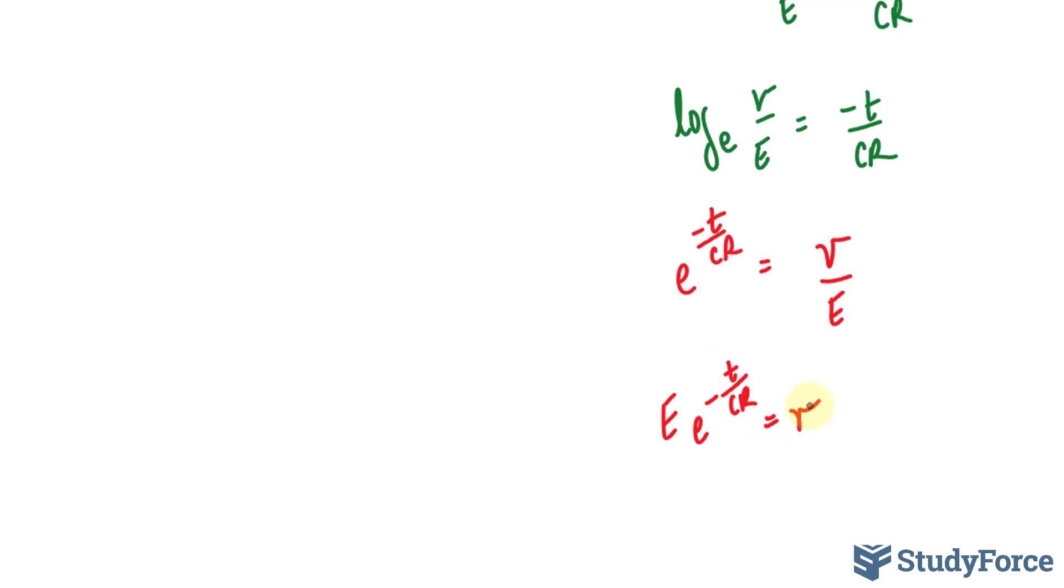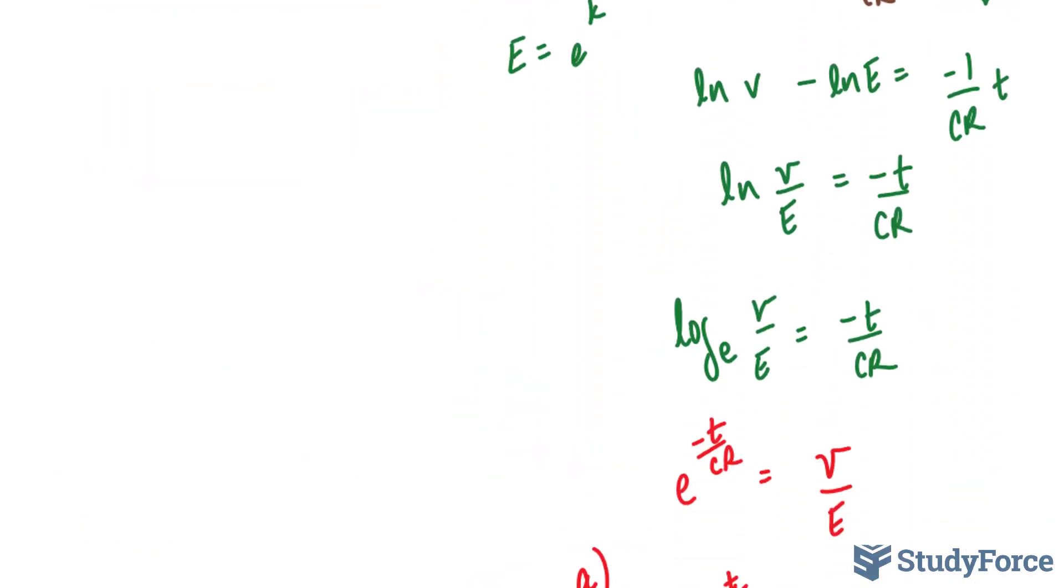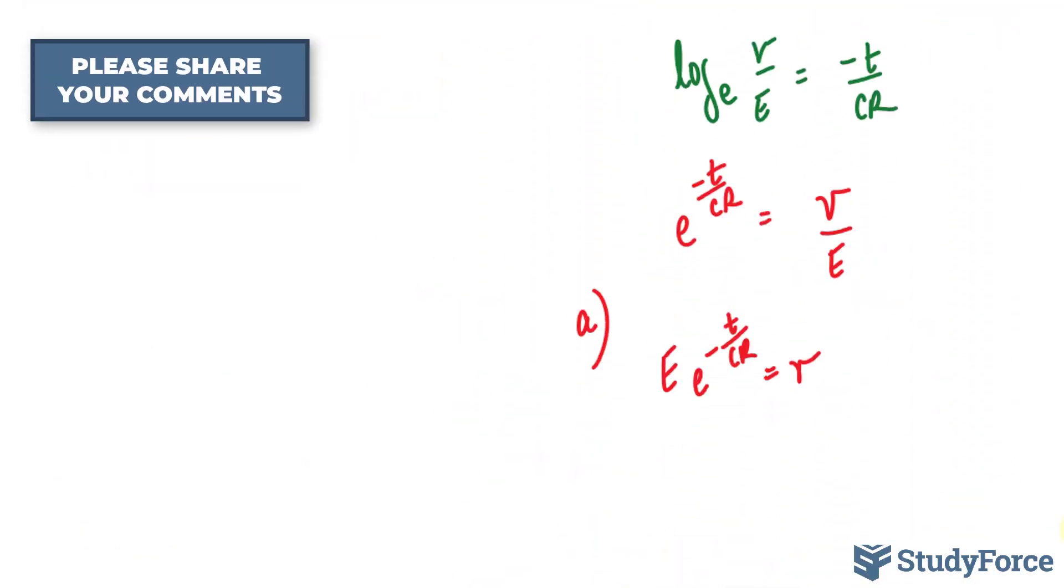That right there represents the answer to part A. In part B, we are asked to write an expression for the current I. Now this is not hard to do. We'll continue to build on what we have.